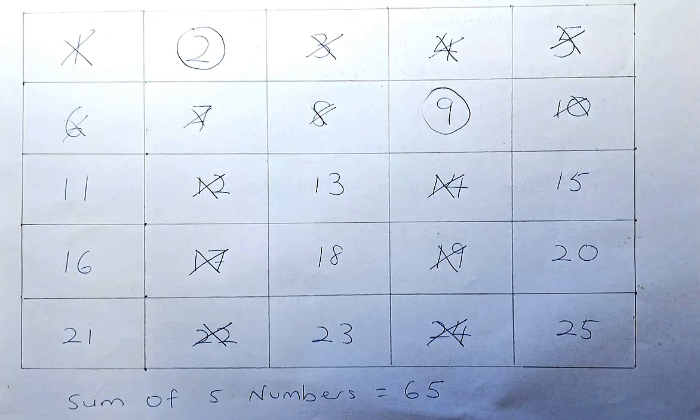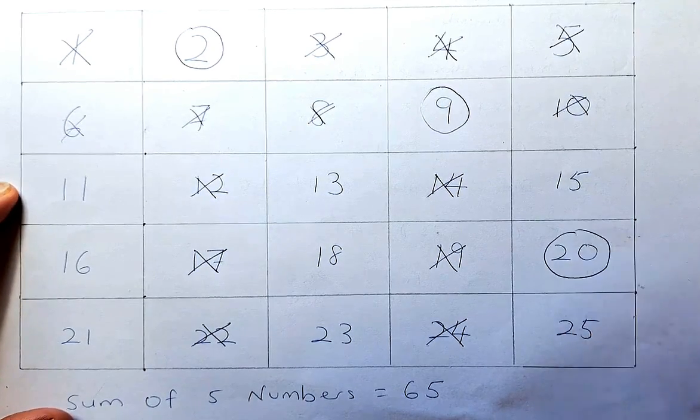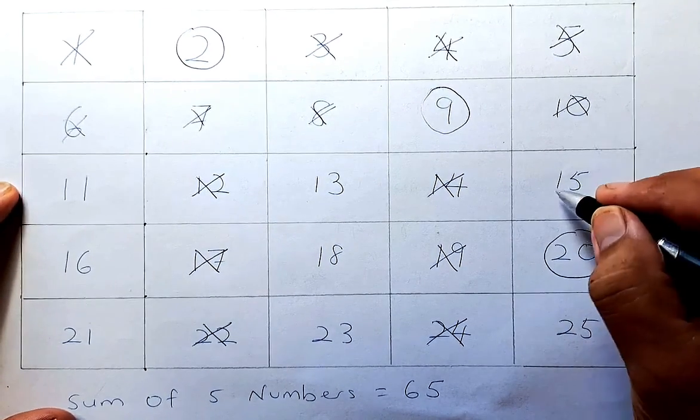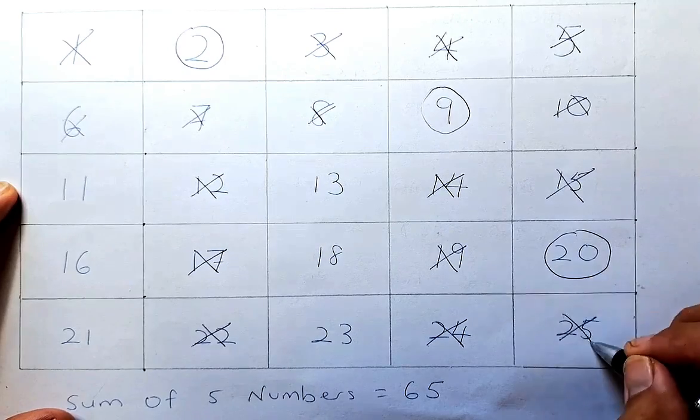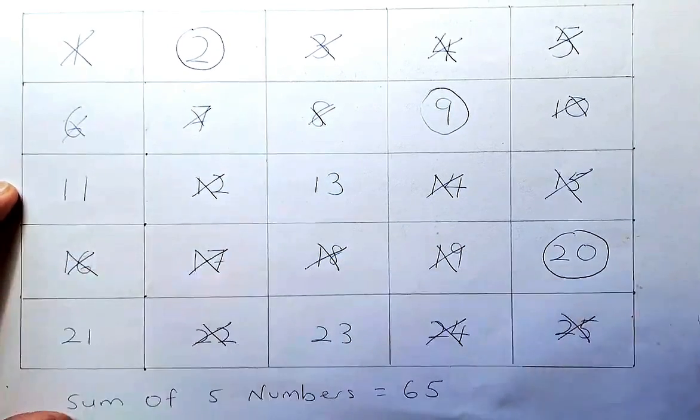Choose another number. Suppose you decide to choose number 20. So now if 20 is chosen, 15 is out, 25 is out because they are in the same row, so it's 18 and 16 because they are in the same row.